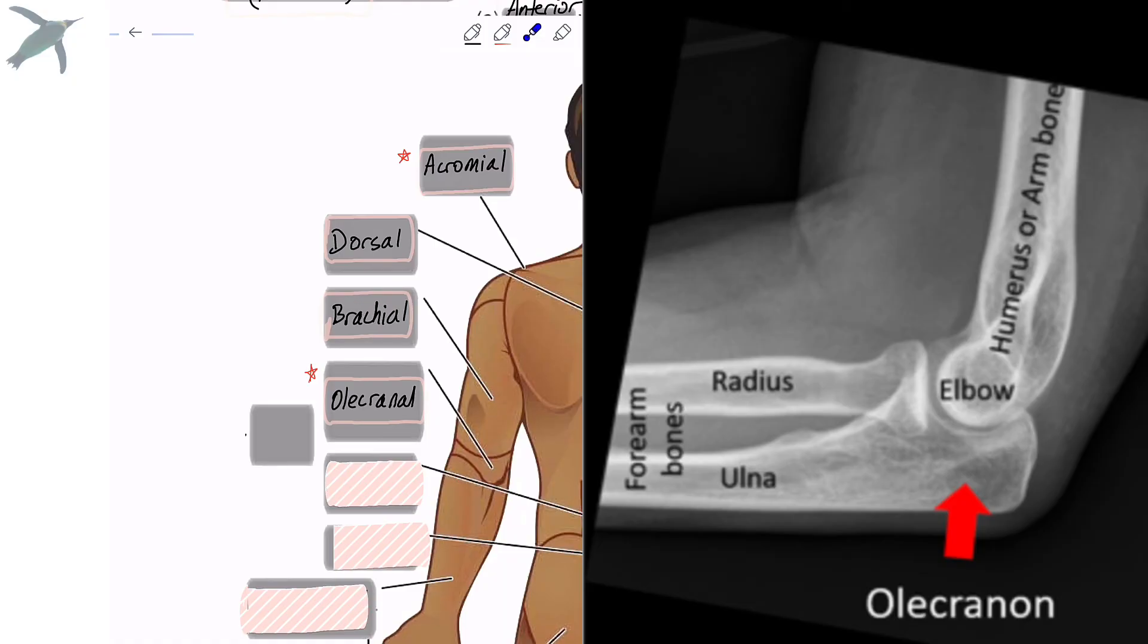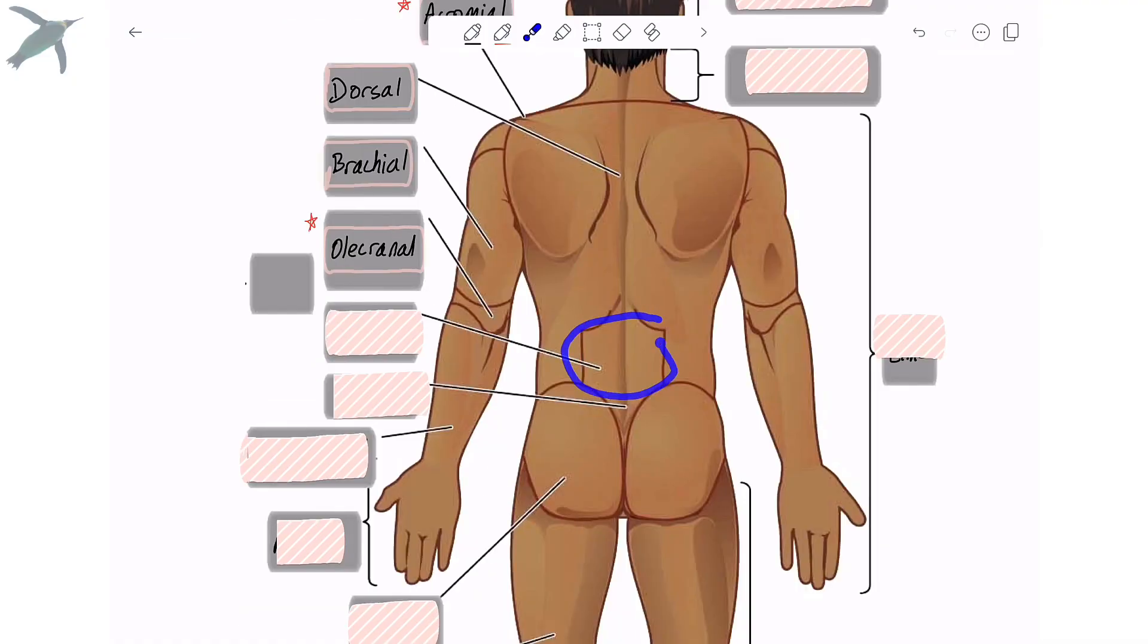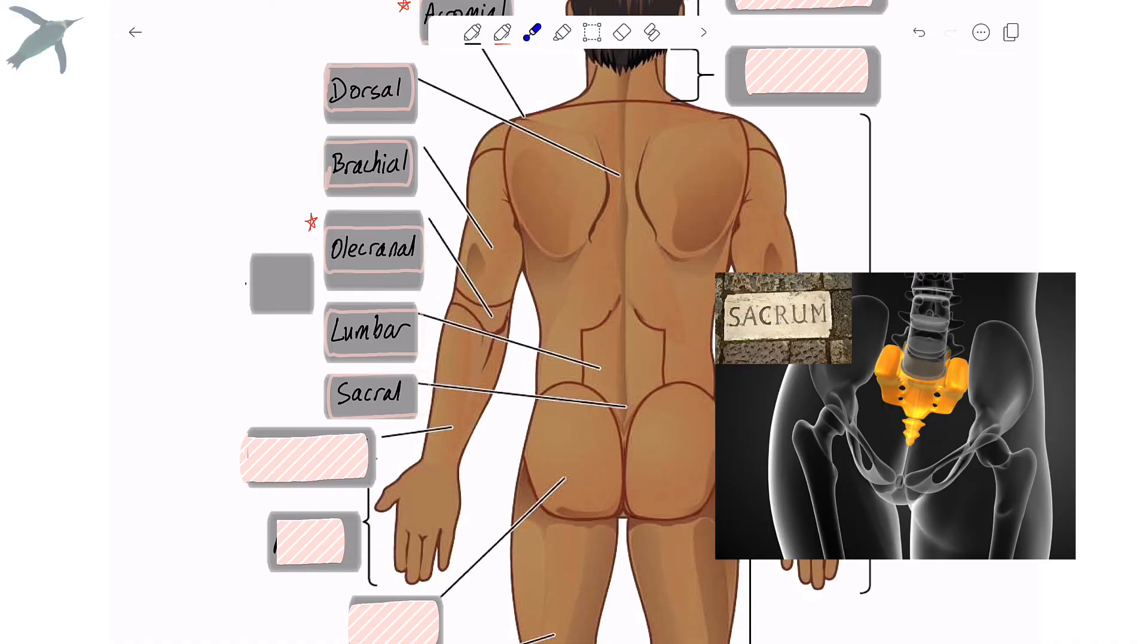The lower back, most people know this one, is the lumbar region. And inferior to that is the sacral region, which literally comes from the Latin sacralis, meaning sacred. So your sacrum and your pelvis are sacred.